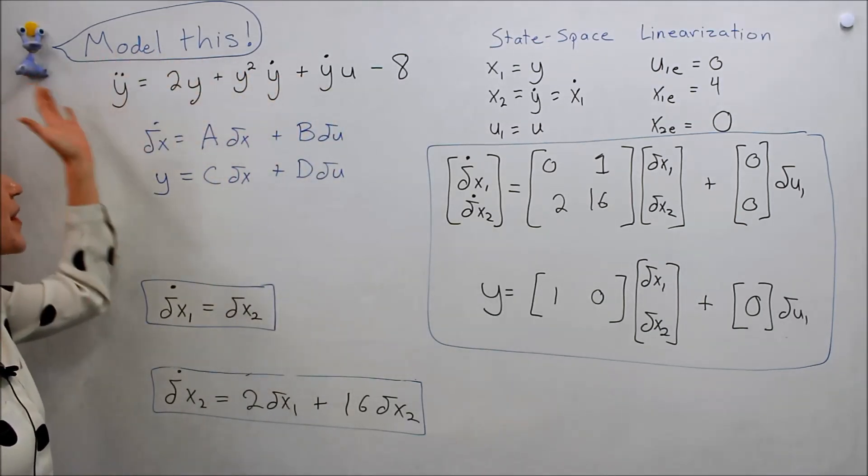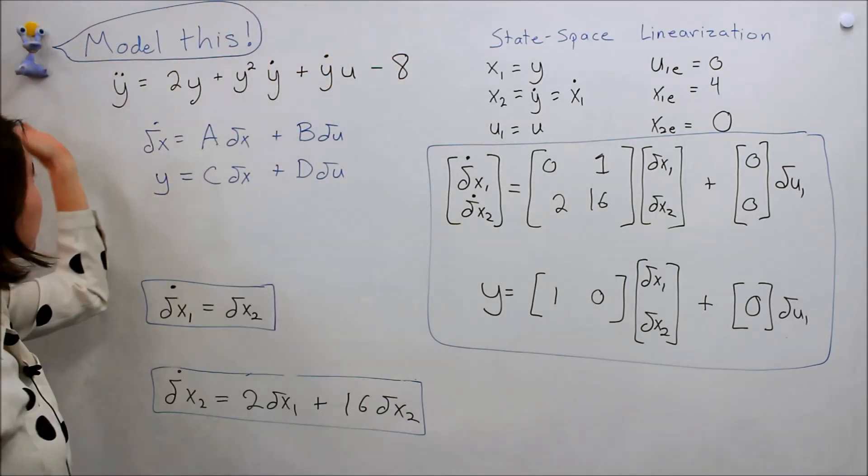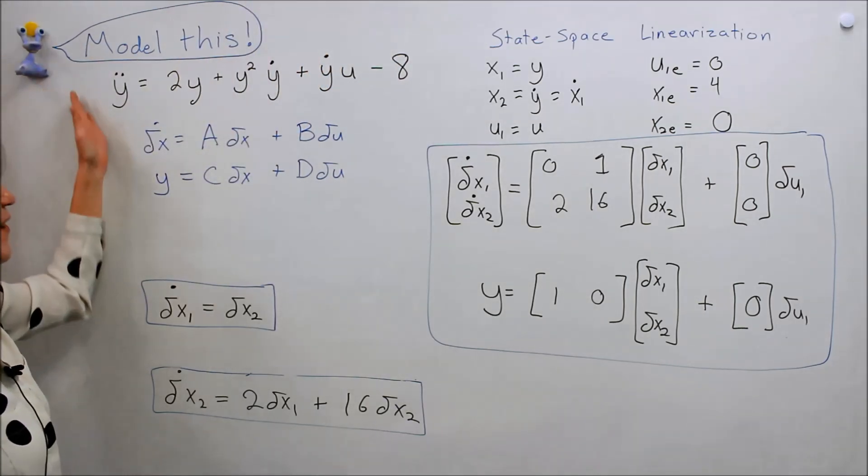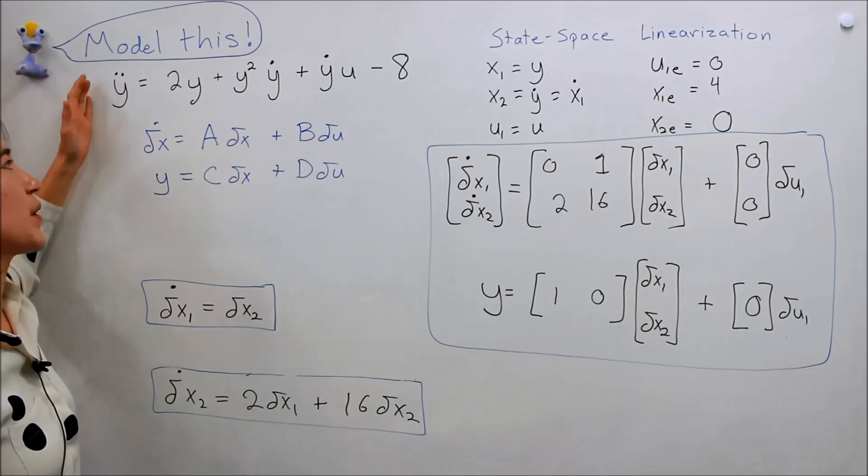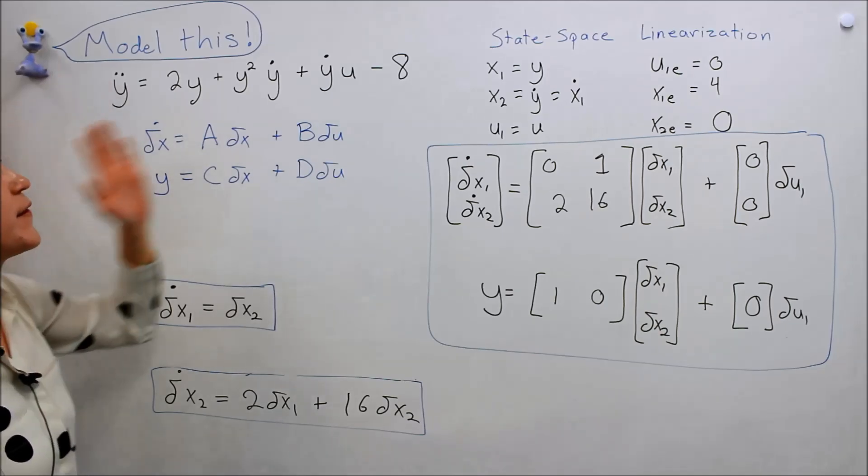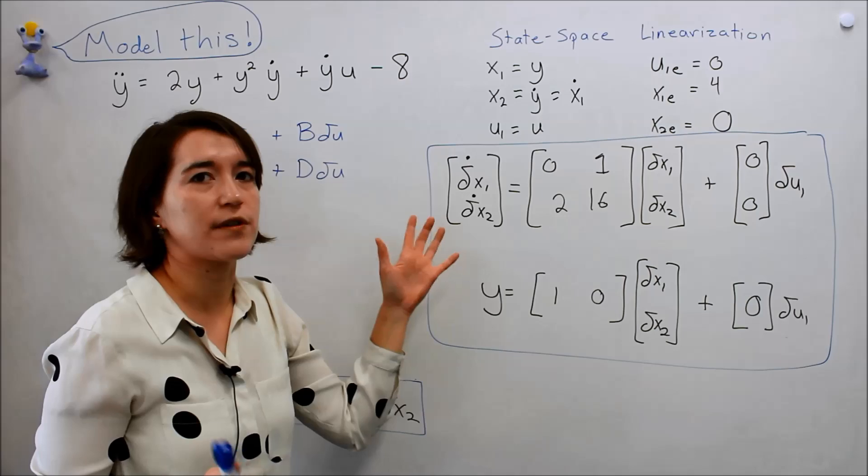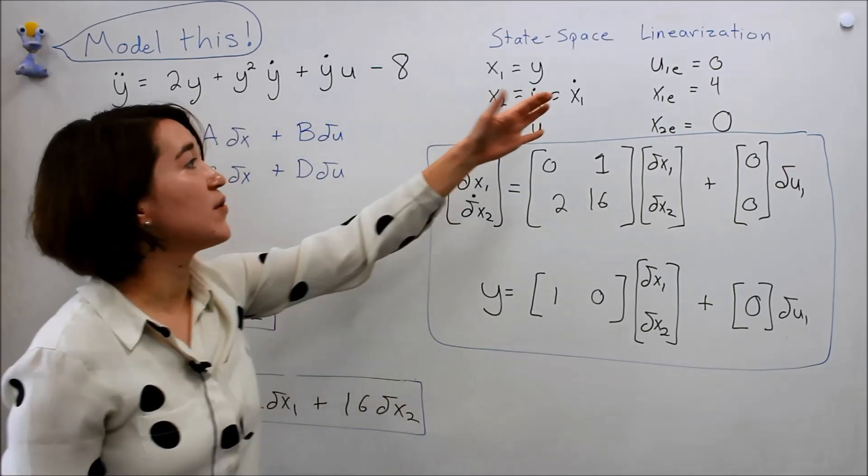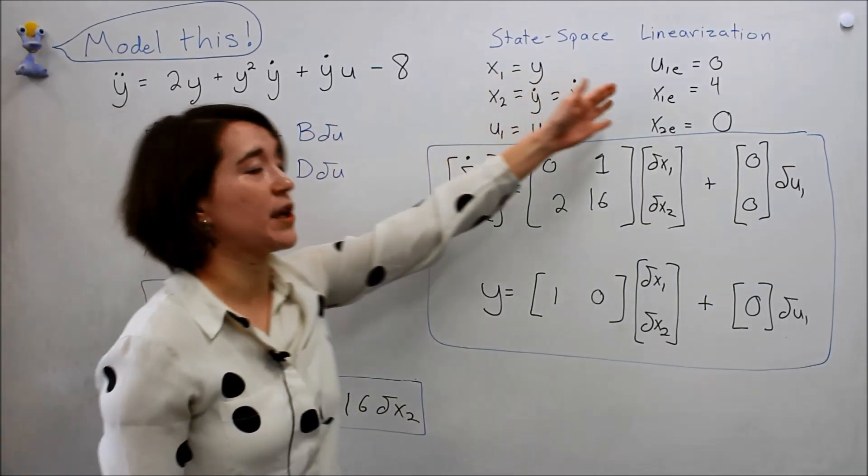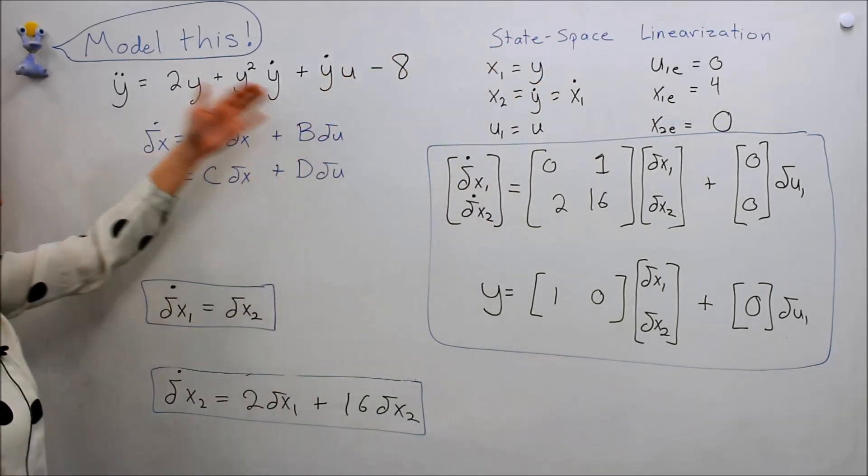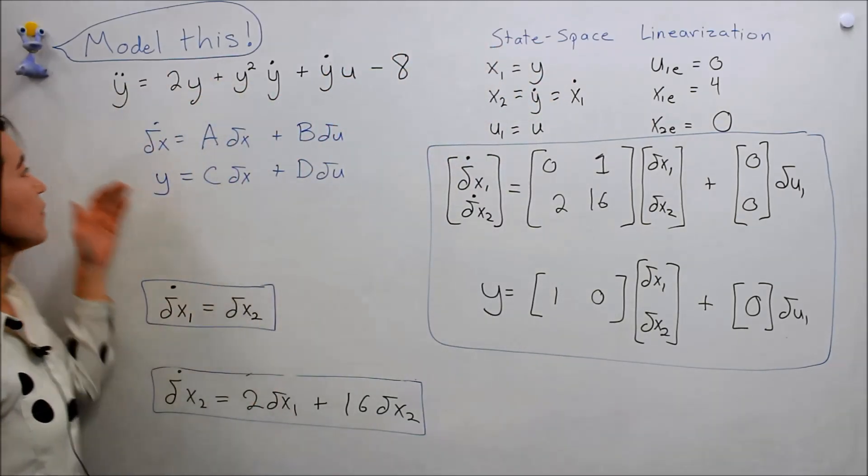We've broken this complicated equation that Valerie made up of a very complex system, but we were able to break it down one step at a time. First using state space to organize all the different states in the system, then using linearization, finding the equilibrium points, and breaking it down, doing the linearization of each of the equations x1 and x2 separately.